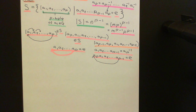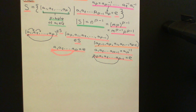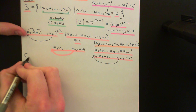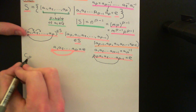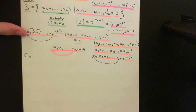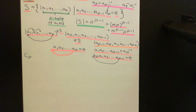Welcome back to this next video in which we are discussing Cauchy's theorem. What we're now going to do is consider a group action by the cyclic group on P elements, which I'll denote C_P here, on this set capital S, which consists of all P-tuples of elements of the group capital G which obey this criterion.